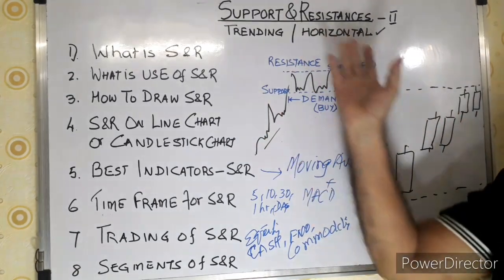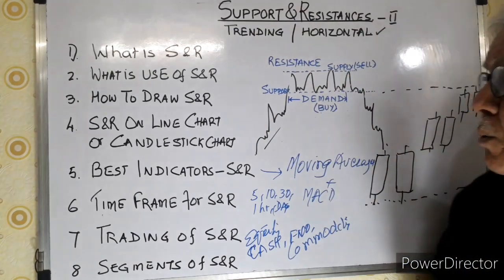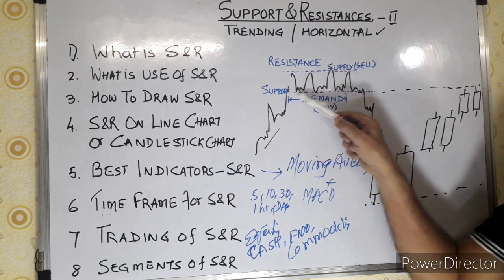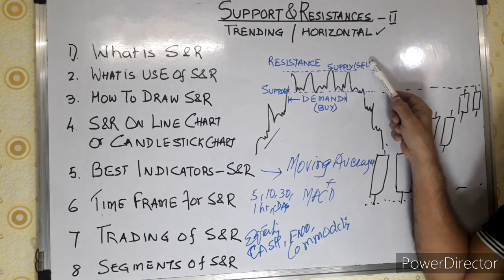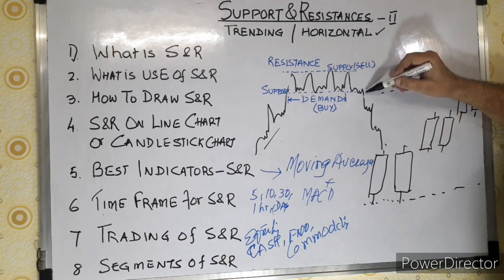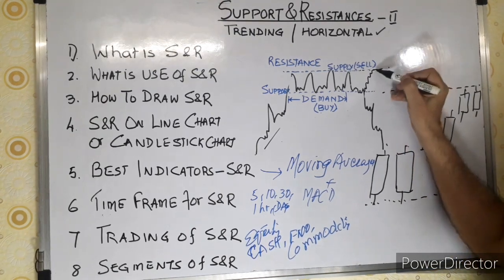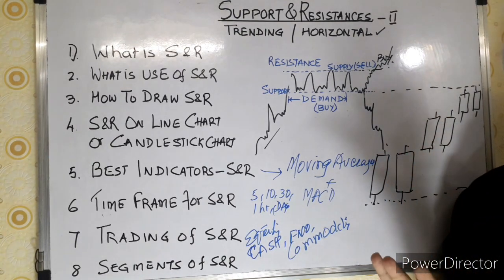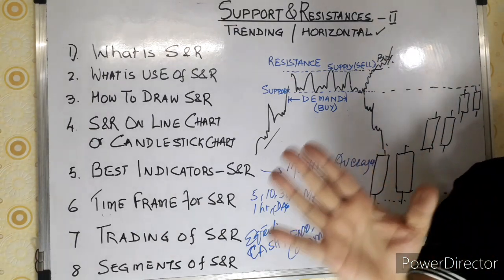To summarize Parts 1 and 2: support and resistance can occur in a trending market or when the market is moving sideways. At the resistance level, supply generally comes in and you tend to sell. However, if demand had come in instead, prices would have gone up — making it a buy. So support and resistance is only an indication: buying is below the support line and above the resistance line when a breakout occurs.